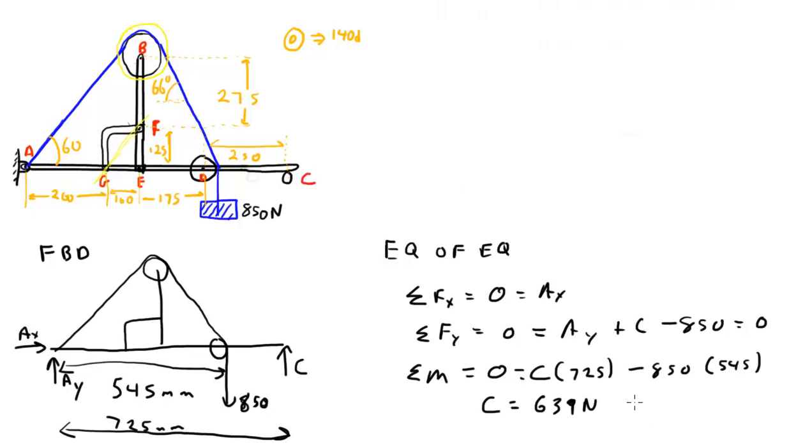we will find that C equals 639 newtons. And AY, reaction at A in the y direction is 211 newtons. So already we've been able to find the support reactions. But that's not really what the questions were. The questions were what's going on inside.